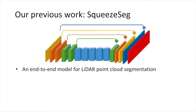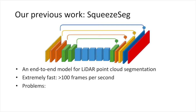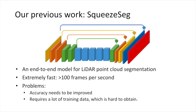In our previous work, SqueezeSeg, we proposed an end-to-end model for LiDAR point cloud segmentation. It is extremely fast; however, its accuracy needs to be improved, and it requires a lot of training data, which is difficult to obtain.